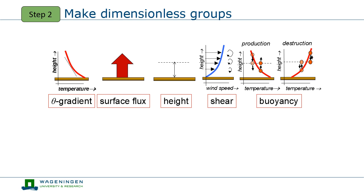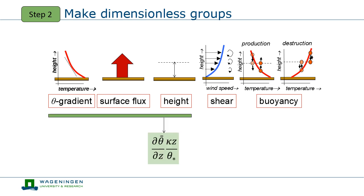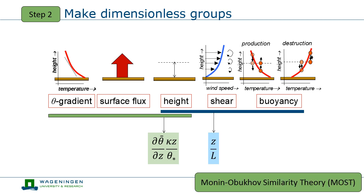The first dimensionless group is the dimensionless temperature gradient, made dimensionless with the temperature scale theta star and height. The second group is z over L, an indicator of stability, where z is the height and L is the so-called Obukhov length. For unstable conditions, the stability indicator z/L is negative; for stable conditions, it is positive; and for neutral conditions, z/L is equal to zero. This particular set of variables and dimensionless groups that forms the basis for the analysis of turbulence in the atmospheric surface layer is called Monin-Obukhov Similarity Theory, or MOST in short.